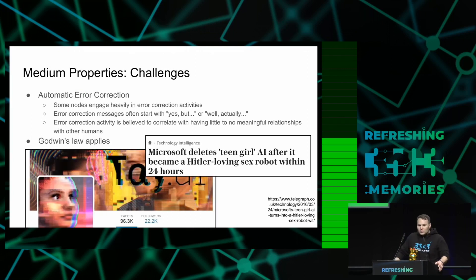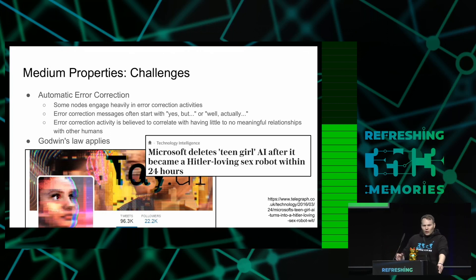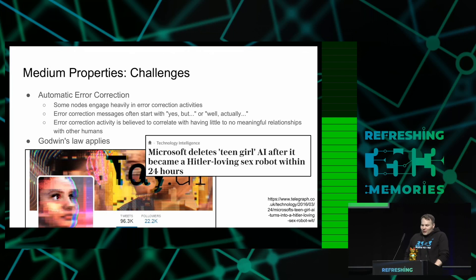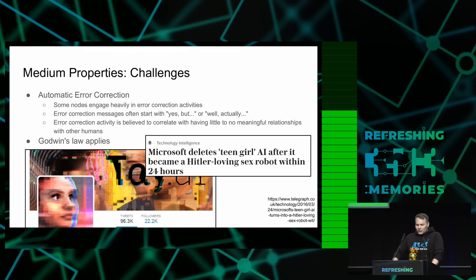There are some challenges to that medium. One very annoying one is automatic error correction. Some nodes engage heavily in error correction activities. Error correcting datagram messages usually start with 'yes, but,' or 'well actually,' and are often not very politely formulated. Error correction activity is believed to correlate with having little or no meaningful relationships with other humans — this applies to the humans running those error correcting nodes. In general, the link layer medium suffers from Godwin's law that applies.